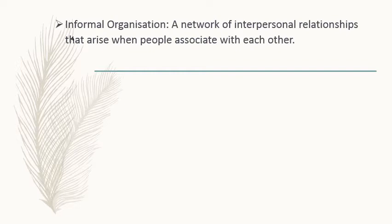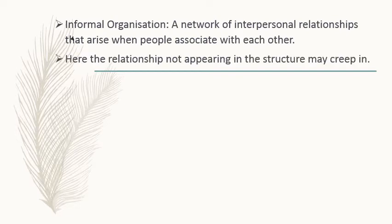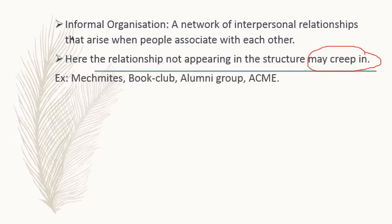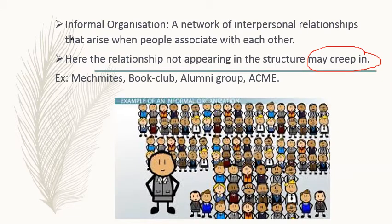Because of these things they come together and form informal groups. This was clearly highlighted during the Hawthorne studies. The relationship that occurs here is not part of the formal organization structure. Examples include MacMites, book clubs, and alumni groups — they are all informal organizations where people just join together to get things done, with no clearly defined hierarchy.